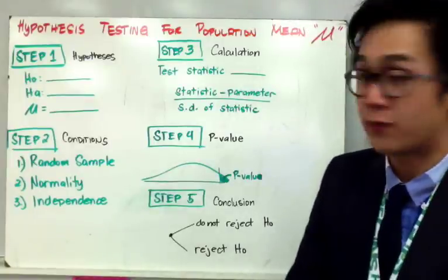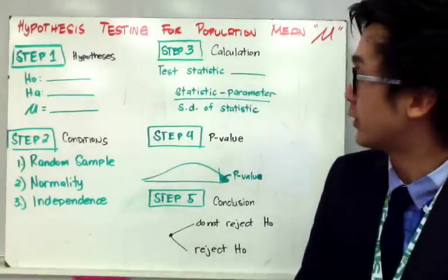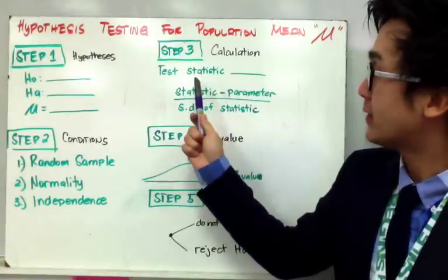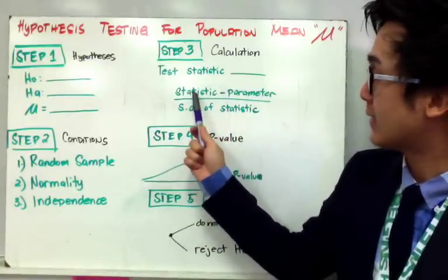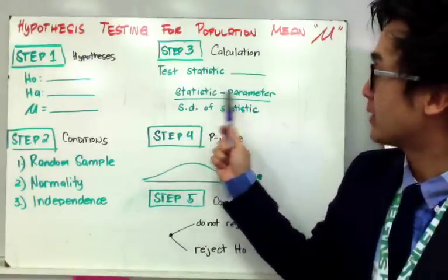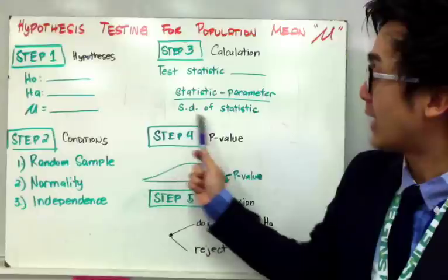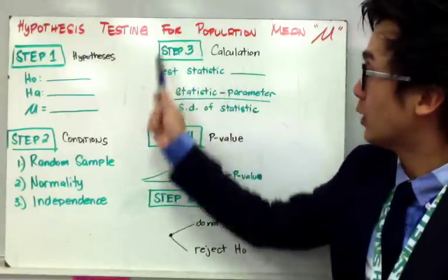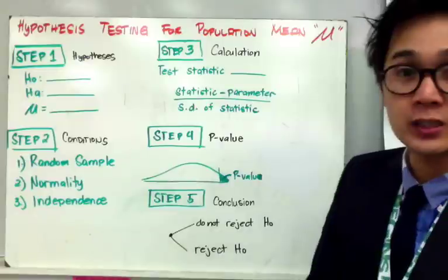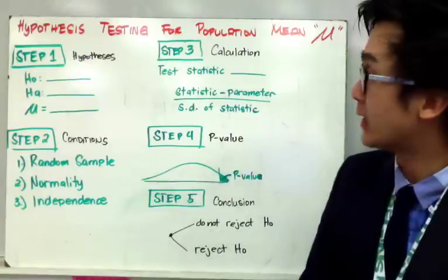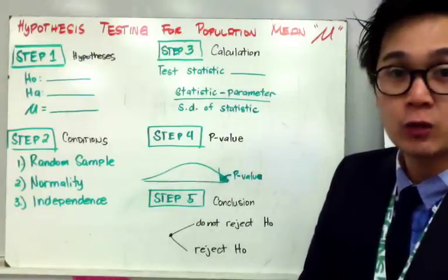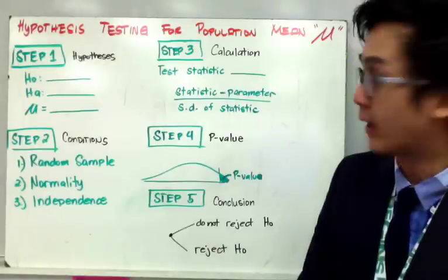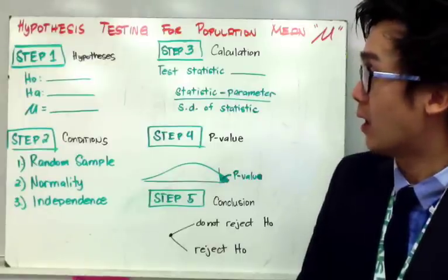For step three, calculation, the formula you will use is to find the test statistic. In general terms, your test statistic is the statistic minus the parameter, all over the standard deviation of your statistic. Your specific formula for calculation changes depending on the parameter you are using and whether the population sigma is given or known in the word problem.